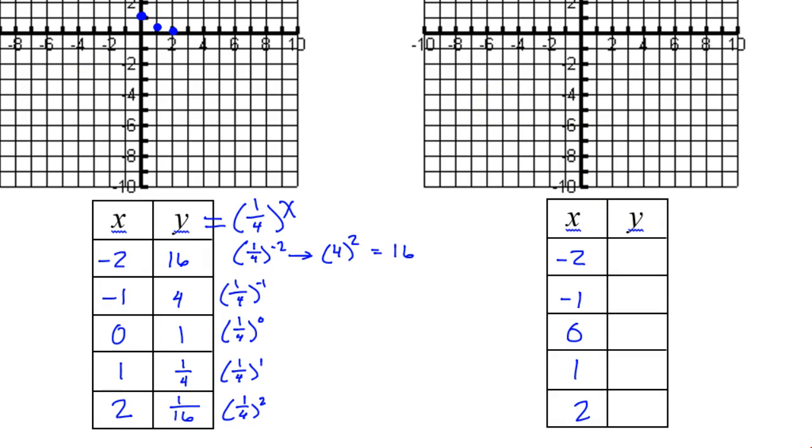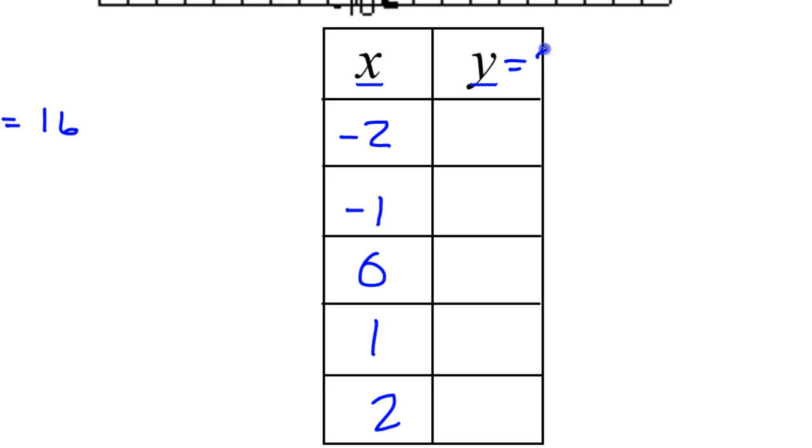If y equals 2 to the x power and these are my x's, that means I'm doing 2 to the negative 2 power, 2 to the negative 1 power, 2 to the 0 power, 2 to the 1 power, and 2 squared. So I'm going to get 4. 2 to the 1 power is just 2. Anything to the 0 power is 1. And now these two will just be the reciprocals, so this will be 1 half and this will be 1 fourth.